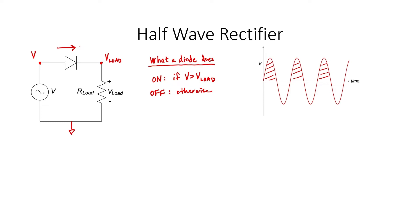During the positive half cycle, current will flow through the diode. If the diode doesn't have any resistance, then the voltage across the load is going to resemble the voltage across the source. In reality, diodes are not completely ideal, so the load voltage will be slightly lower than the source voltage. For the purposes of this discussion, we can assume that the diode is ideal. That just means that its internally modeled mathematical resistance is zero ohms.